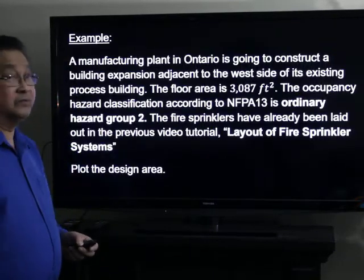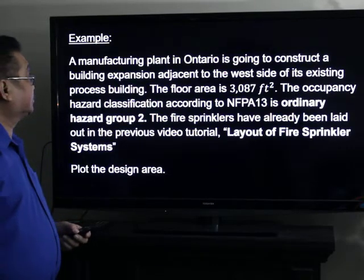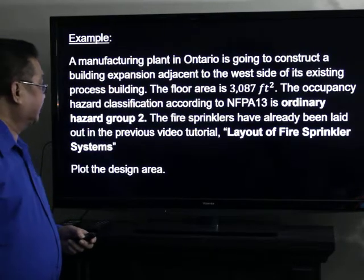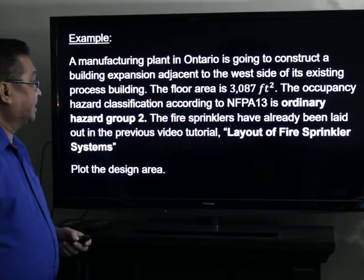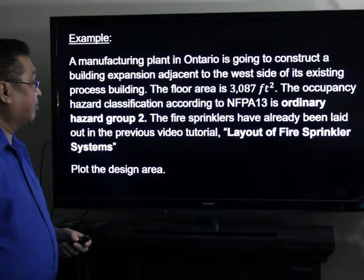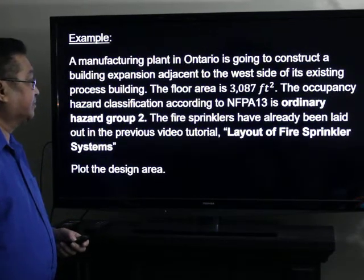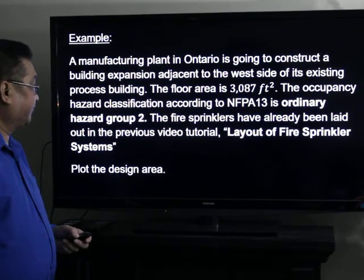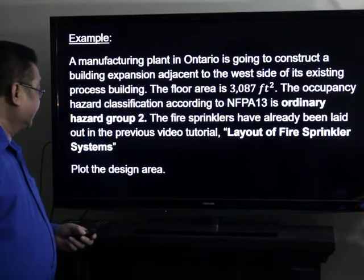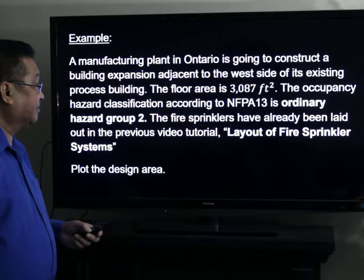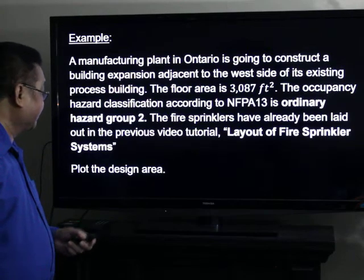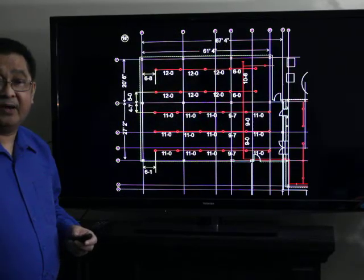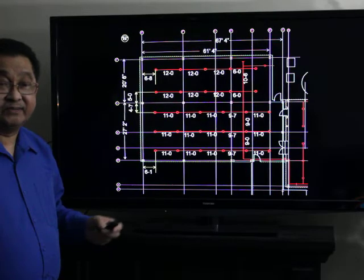Our topic for today is plotting the design area in a sprinkler system. A manufacturing plant in Ontario is going to construct a building expansion adjacent to the west side of its existing process building. The floor area is 3,087 square feet. The occupancy hazard classification, according to NFPA 13, is ordinary hazard group 2. The fire sprinklers have already been laid out in the previous video tutorial, layout of fire sprinkler systems. Plot the design area.